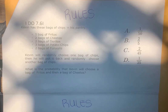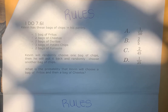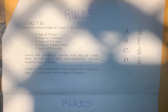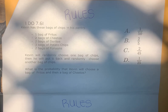Kevin has these bags of chips in his pantry: one bag of Fritos, two bags of Cheetos, two bags of Doritos, three bags of potato chips, two bags of Funyuns. Kevin will randomly choose one bag of chips, then he will put it back and randomly choose another bag of chips. What is the probability that Kevin will choose a bag of Fritos and then a bag of Cheetos?